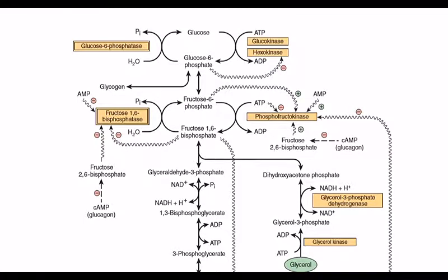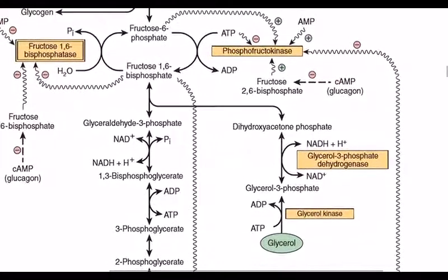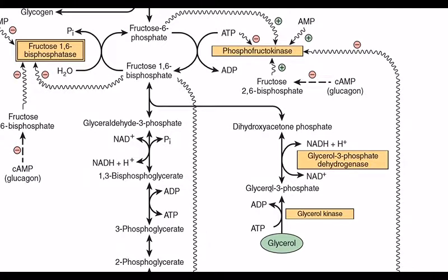First, we start with glycerol. When we take glycerol, the first thing we do is phosphorylation. Glycerol kinase acts on glycerol to produce glycerol 3-phosphate.